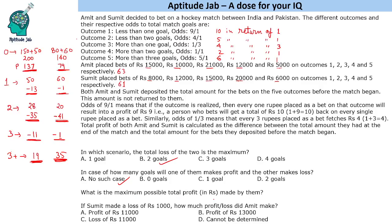The maximum total possible profit is achieved when there are no goals. In that case they make a combined profit of 137,000 plus 79,000, which is 216,000. For the next question: if Sumit made a loss of 1,000, how much profit or loss did Amit make? There are two scenarios in which Sumit makes a loss of 1,000 — one goal and three goals. In one case Amit is losing 13,000 and in the other he is losing 11,000, so we cannot determine Amit's profit or loss uniquely.